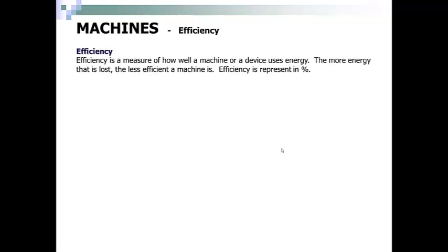Efficiency is the measure of how well a machine uses energy. The more energy that is lost, the less efficient a machine is. Efficiency is represented as a percentage: Efficiency = (Mechanical Advantage / Speed Ratio) × 100.